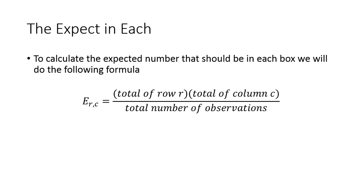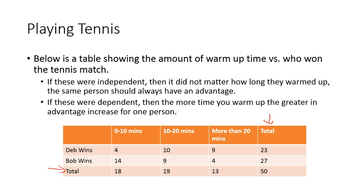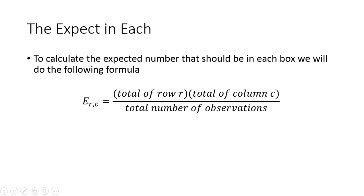So here's how we do our expected, or how we expect each one should be. So to calculate those, we take the total in a row times the total in a column, and then divide it by the total number of observations. So we take an entire row total, multiply it by the total column, and then divide it by the entire total. So if you look over here, we would take an entire row and an entire column, multiply them together, and then divide them by the grand total. And that's how much we would expect it to be.